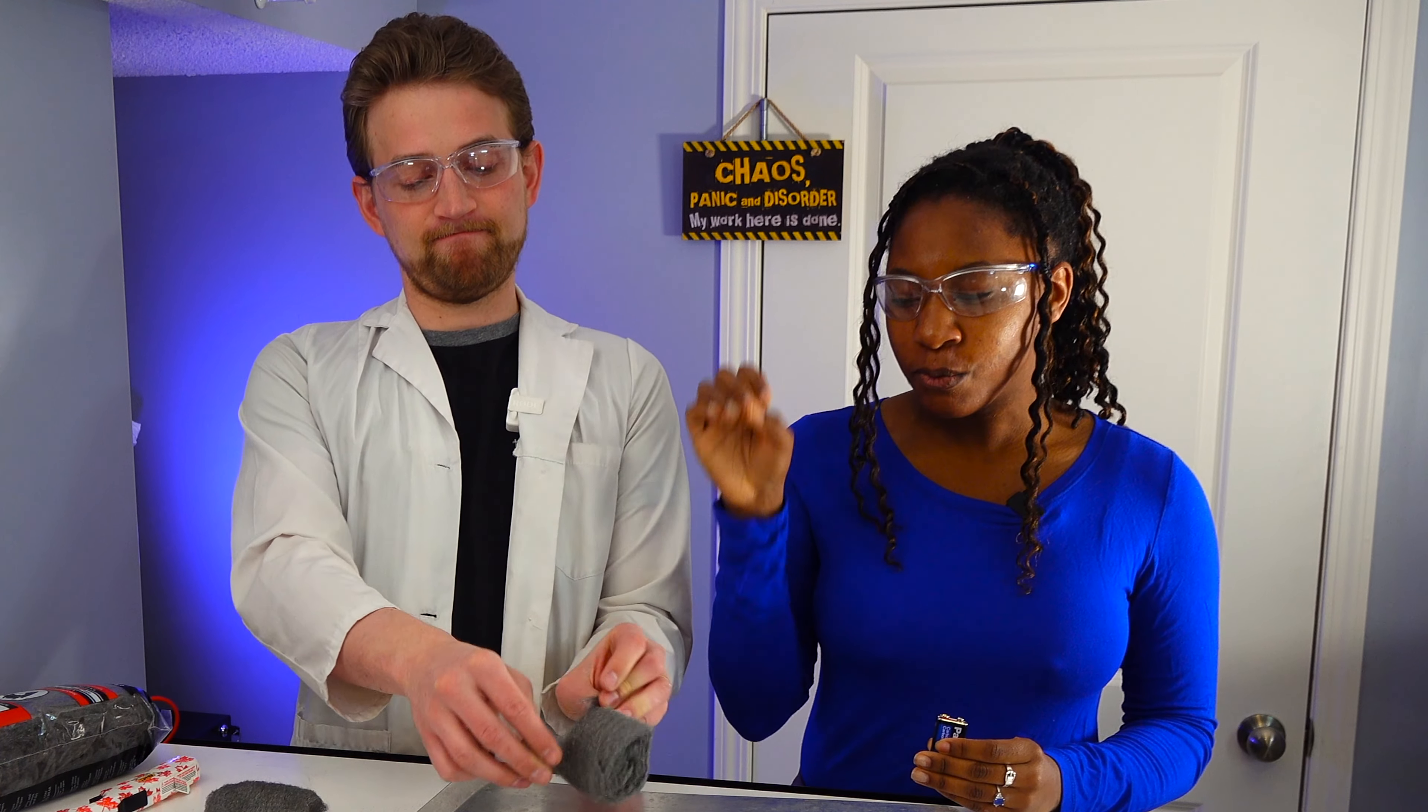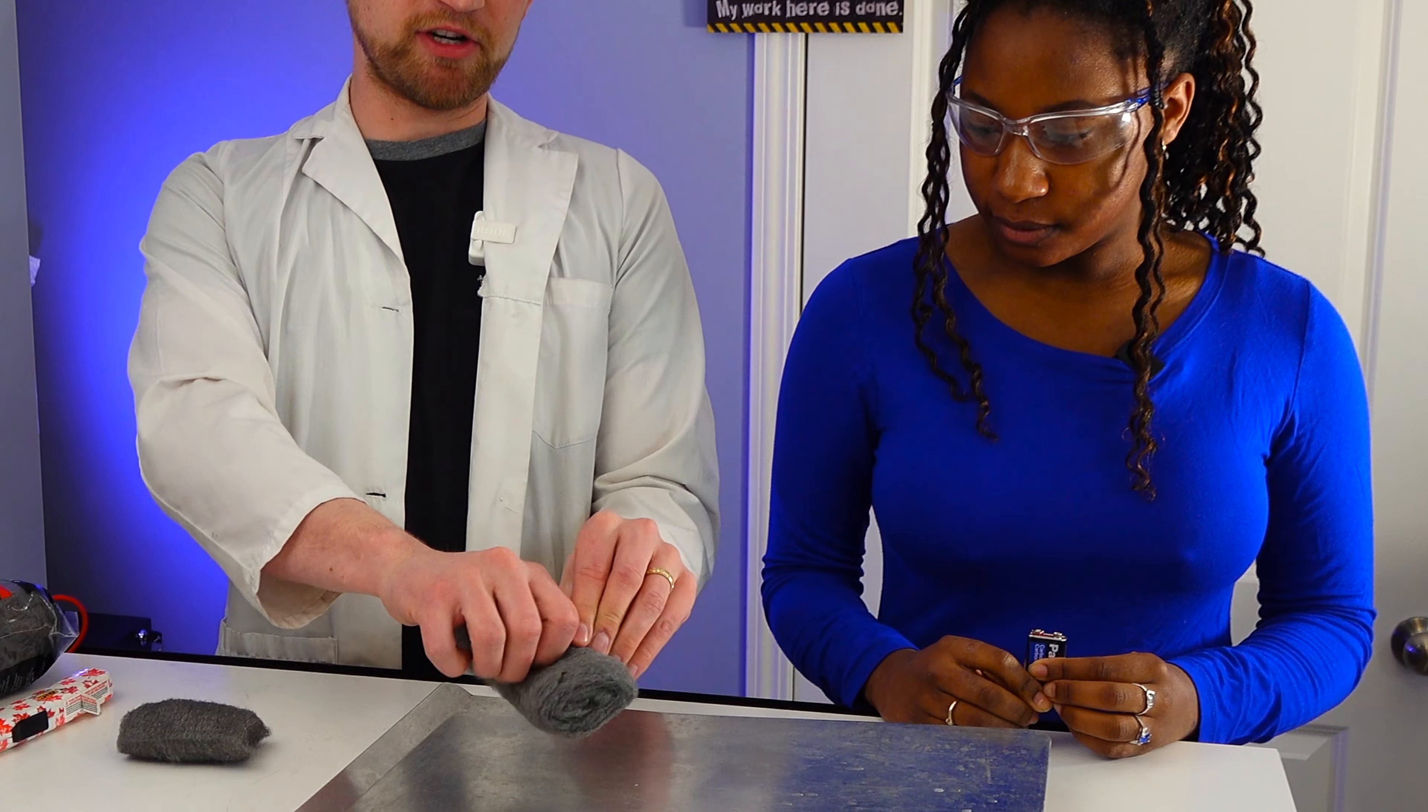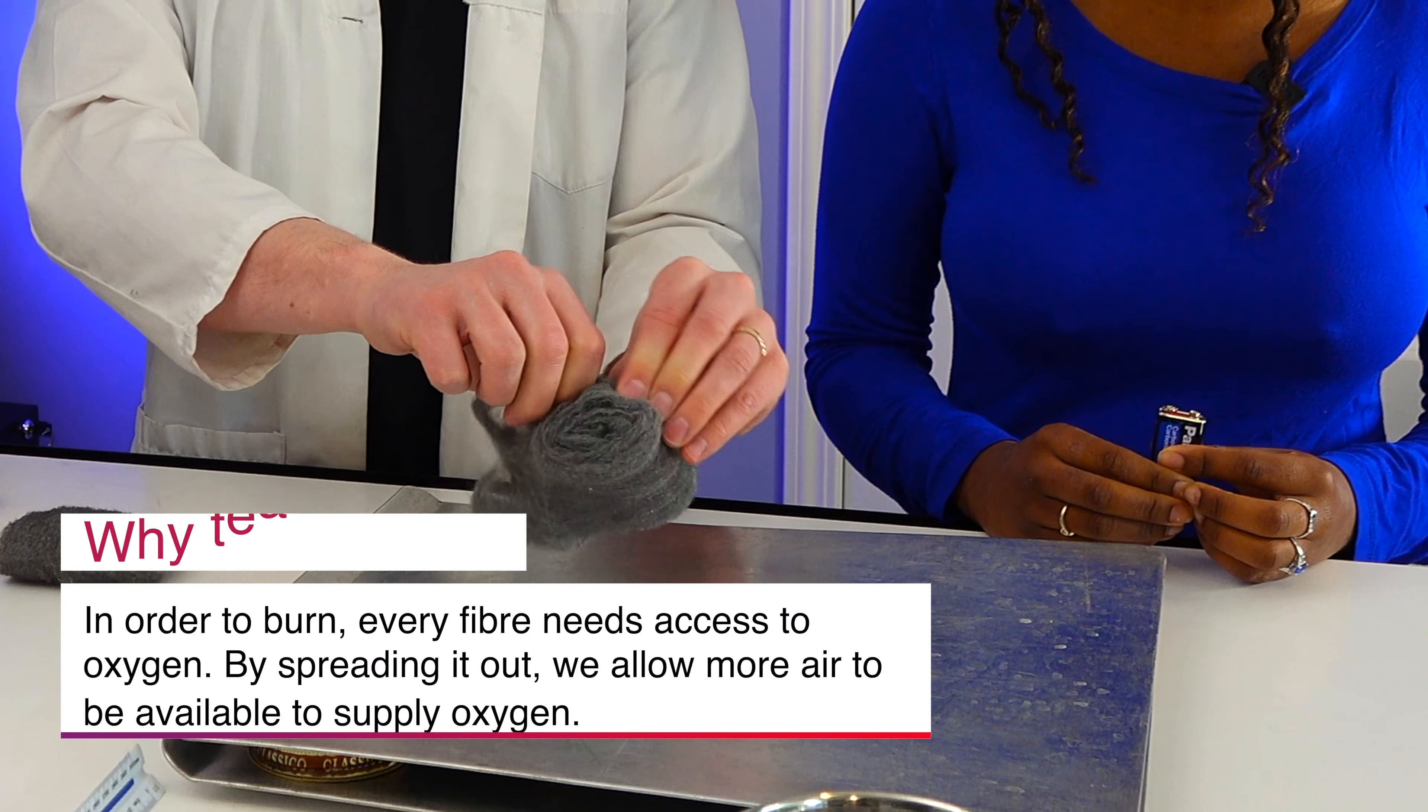First step with burning this, we need to spread it out, and that's so the oxygen in the air can really get at the steel. And it's fine enough, you can just rip it with your hands.